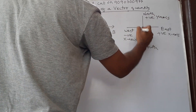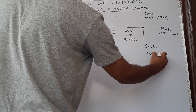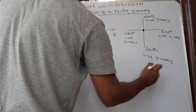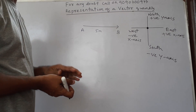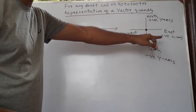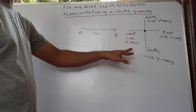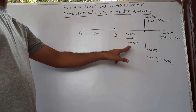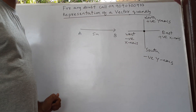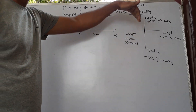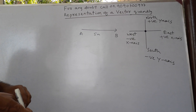From origin to the bottom will be negative y-axis. Along the east direction I am taking positive x-axis, along west direction negative x-axis, along north direction positive y-axis, and along south direction negative y-axis.